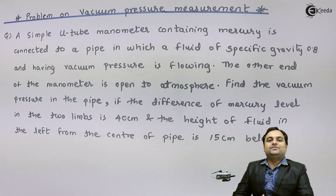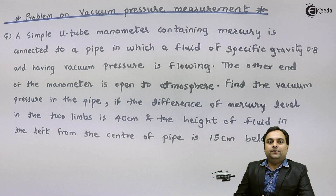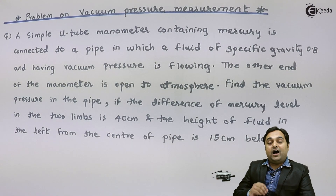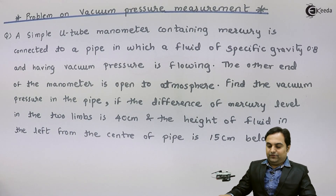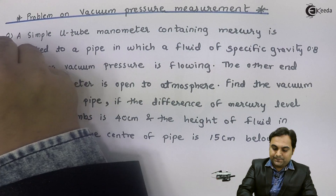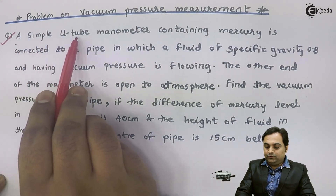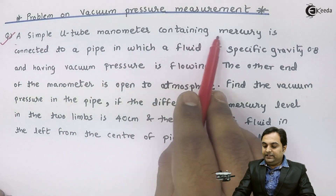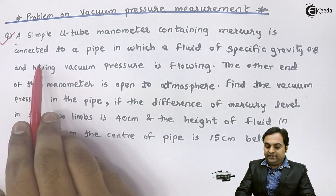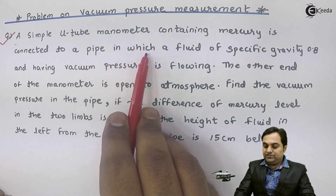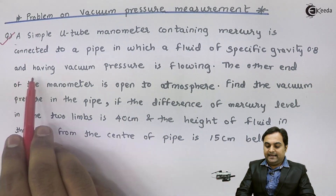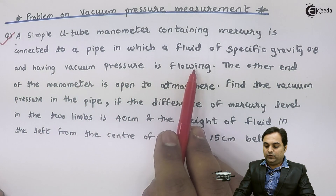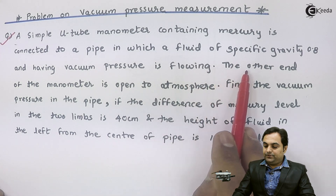Hello friends, in this video we will see a problem on how to measure vacuum pressure using a simple U-tube manometer. The question is: a simple U-tube manometer containing mercury is connected to a pipe in which a fluid of specific gravity 0.8 and having vacuum pressure is flowing.